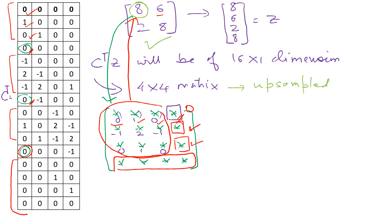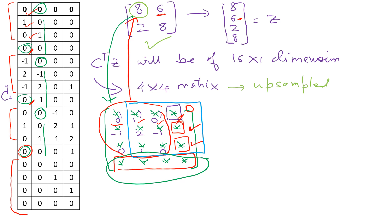Similarly, for the entry 6, which is the second value in the output, the convolution was associated with 9 entries shifted by one position. So in its convolution matrix row you find: a first auxiliary zero, then 0, 1, 0, a second auxiliary zero, then -1, 2, -1, a third auxiliary zero, then 0, 1, 0, followed by 4 auxiliary zeros. The same logic applies to the remaining two rows of the convolution matrix.